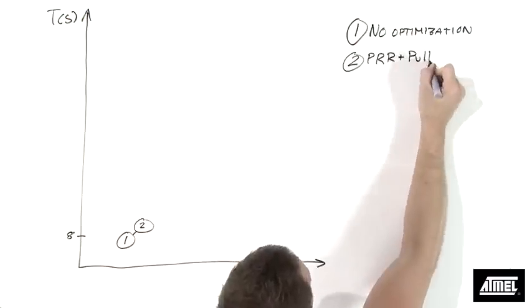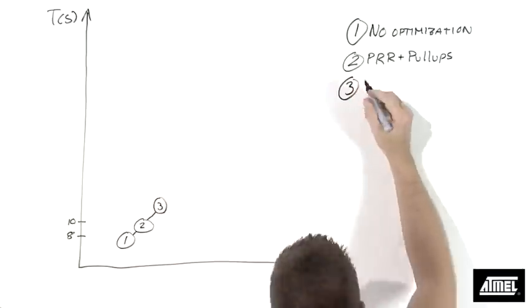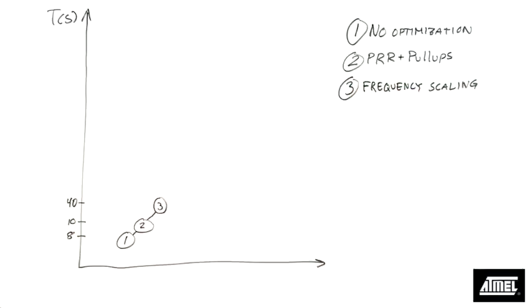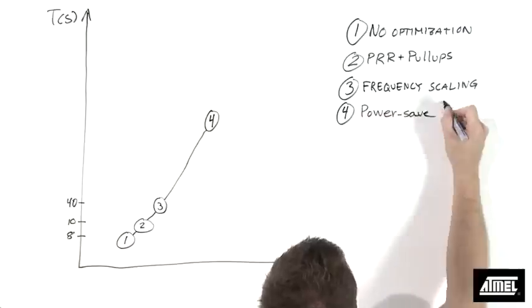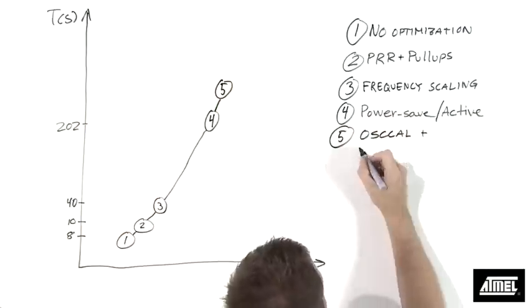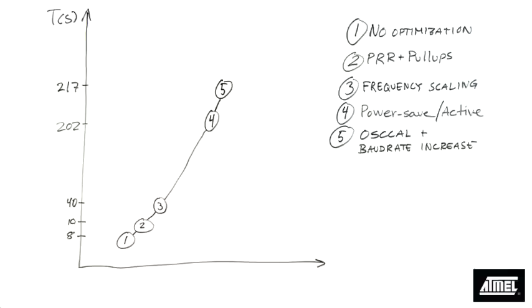If our data processing routine had been longer, we might also have benefited from dynamic clock scaling. We would then use no pre-scaling during data processing and scale the clock down while waiting for the UART to complete data transmission.